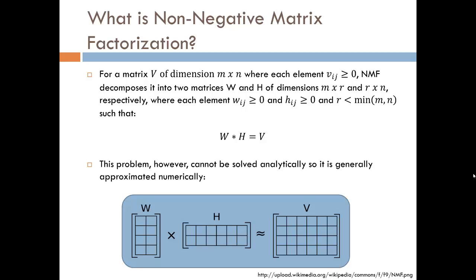This problem has many solutions and cannot be solved analytically, so it is generally approximated numerically. In this example down below, we see a 4 by 6 matrix V is approximated as a 4 by 2 matrix W multiplied by a 2 by 6 matrix H.